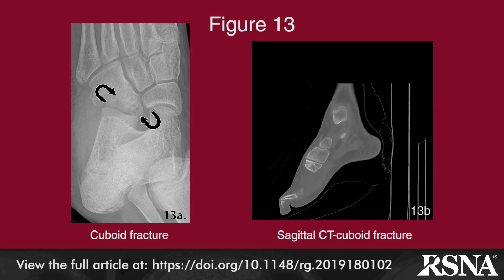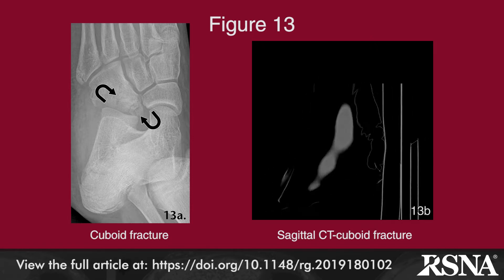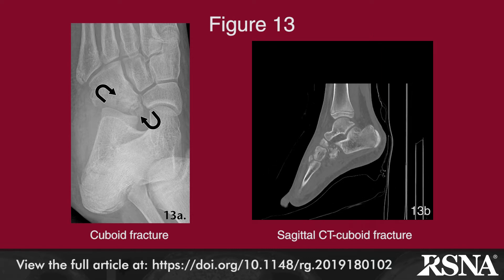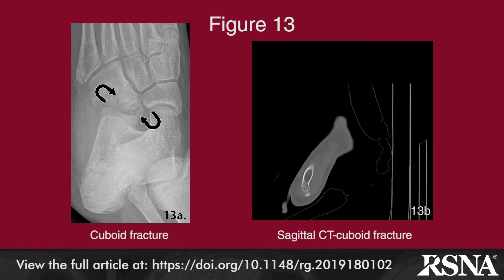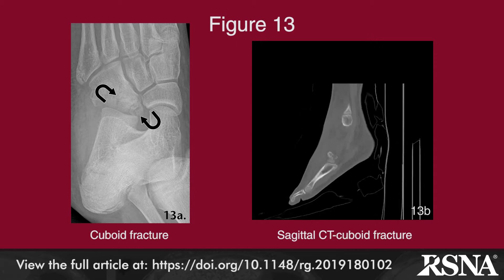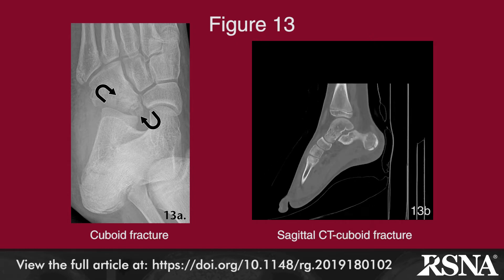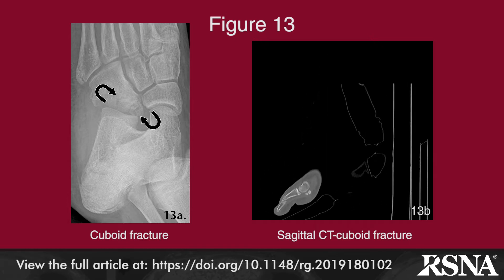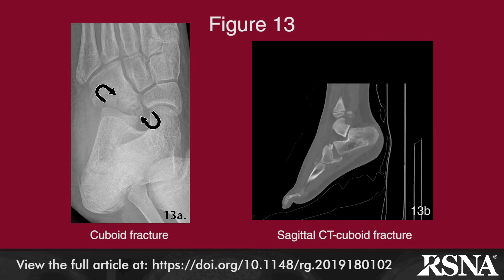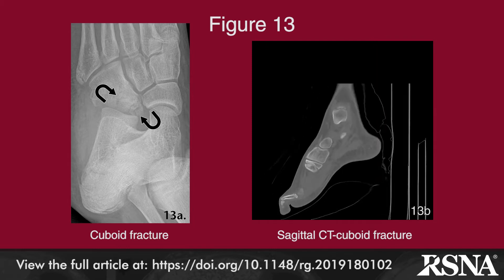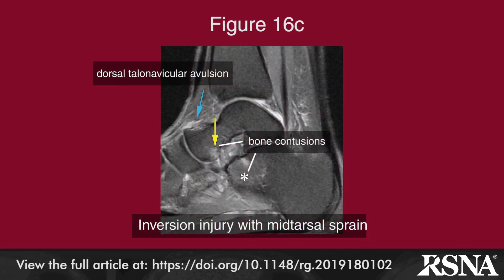Figure 13 shows a midtarsal sprain and fracture due to eversion injury, with a DICOM image stack of the sagittal CT nicely illustrating the findings. Since inversion injury with sprain of the midtarsal joint is typically associated with plantar flexion of the foot, dorsal distraction of the talonavicular joint can result in dorsal talonavicular ligament sprain, as shown in figure 16.